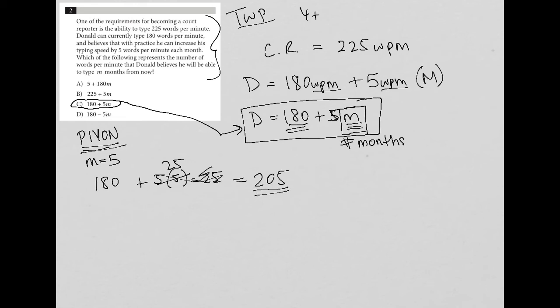We expect Donald will be able to type 205 words per minute in five months. The next step with plugging your own number is to take that same 5 and plug it into each of the M's in the answer choices until we find a matching answer that also gives us 205. This strategy is not required for this question because the simplest thing to do was just translate, but I show you this strategy so you know it for future questions.